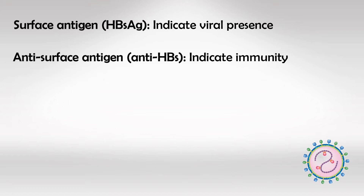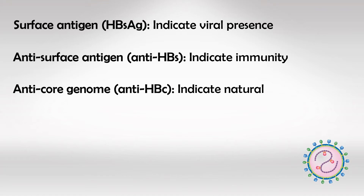The core is so small and it's made of DNA, so we cannot measure it, but we can measure antibodies against this core, and we only get these antibodies from a natural infection. So if a blood sample has a serology marker of anti-HBc, it means that this patient at one point had a hepatitis B infection. This is the differentiating feature between natural immunity and artificial vaccine immunity.